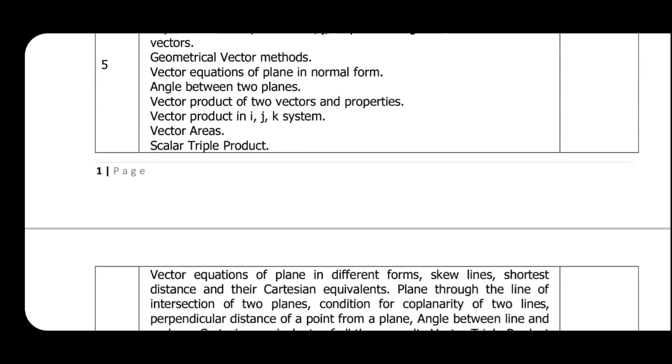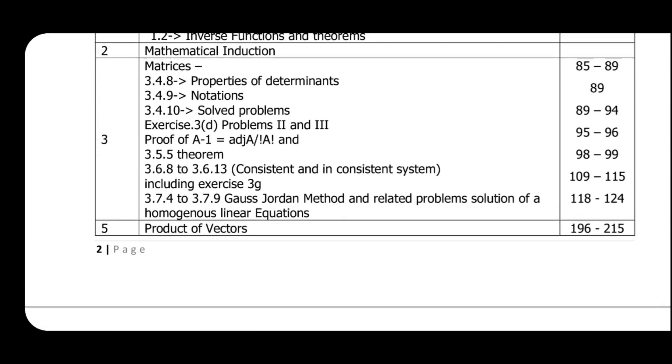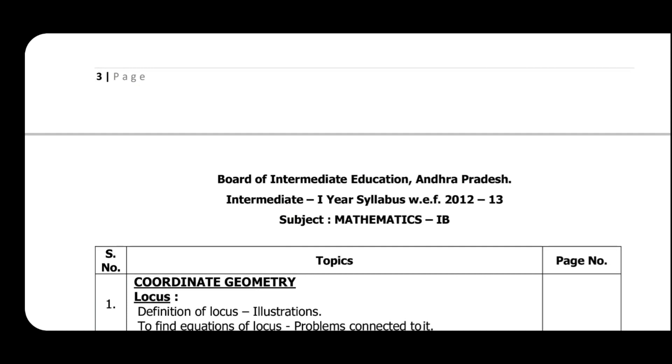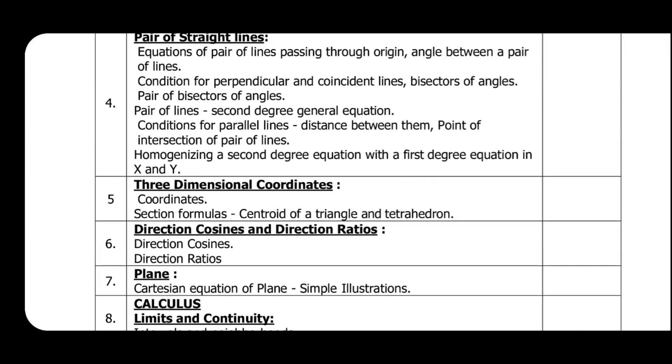This is the first year maximum 70 percent portion divided. This is Max 1A, this is Max 1B, which contains 70 percent portion.